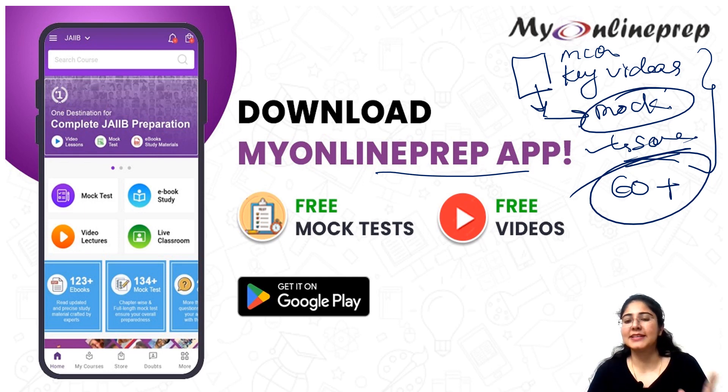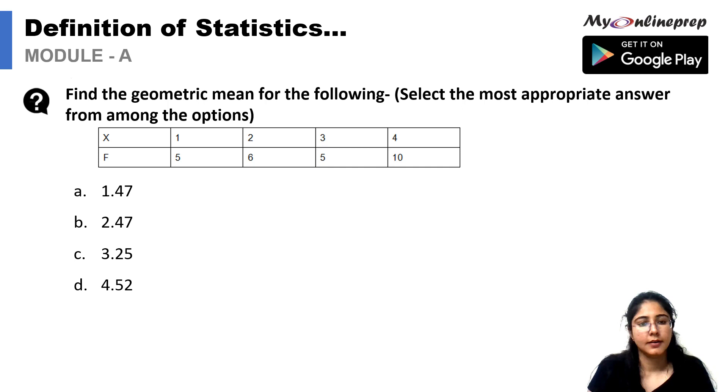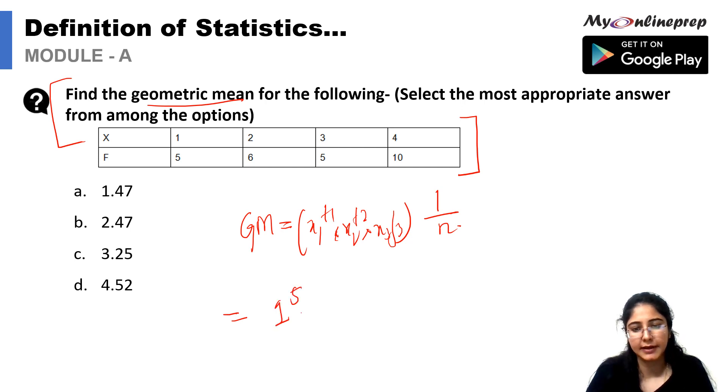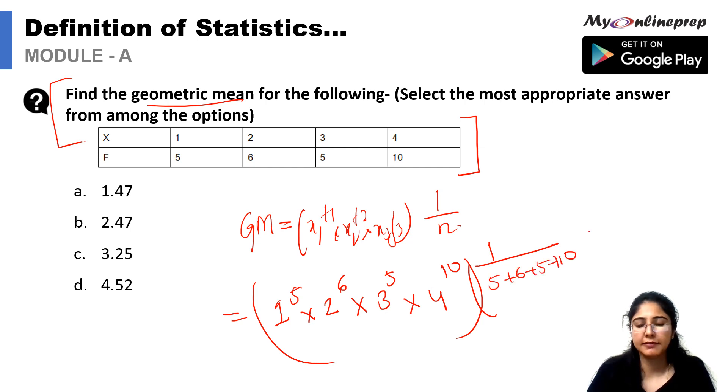In this question we have been given to find out the geometric mean with a series given to us. Formula is GM equals to x1 to the power f1, multiplied by x2 to the power f2, multiplied by x3 to the power f3, and so on, whole to the power 1 upon n. It would be equals to 1 to the power 5 multiplied by 2 to the power 6 multiplied by 3 to the power 5 and then multiplied by 4 to the power 10, whole power 5 plus 6 plus 5 plus 10.